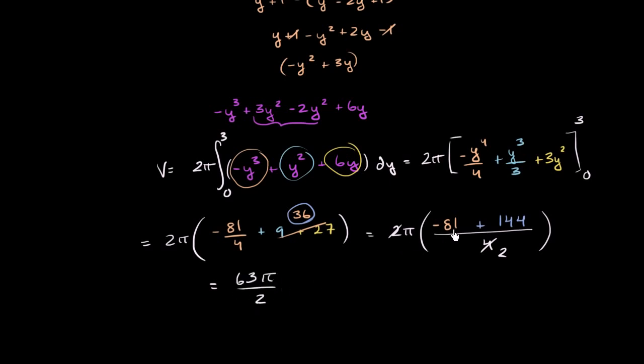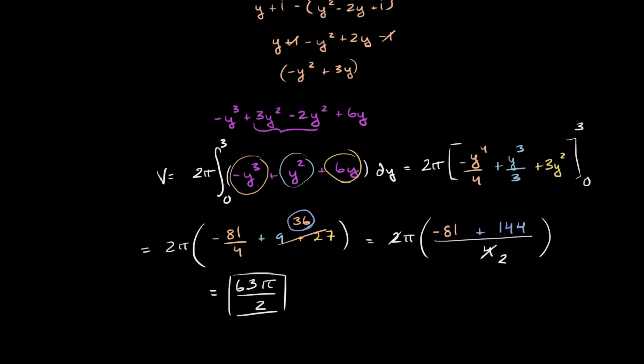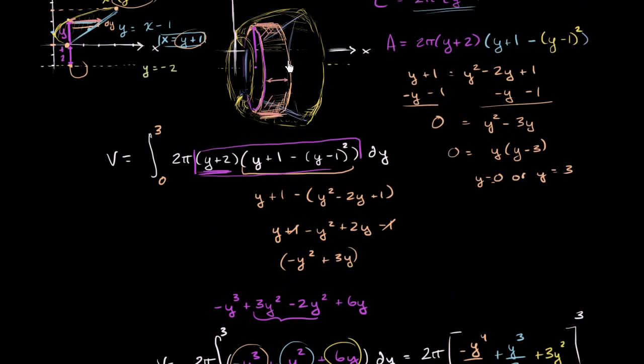Did I do that right? 60 plus 81 is 141. Add another 3, you get 144. Yep, and we're done. We figured out the volume of our front of jet engine looking shape.